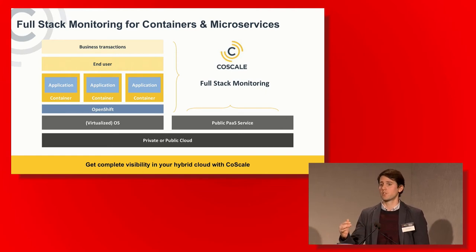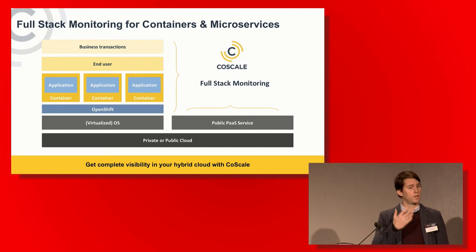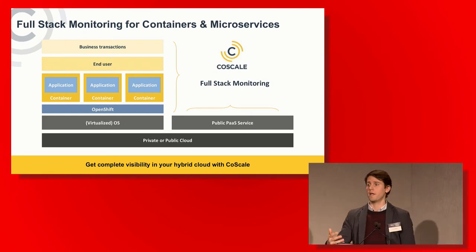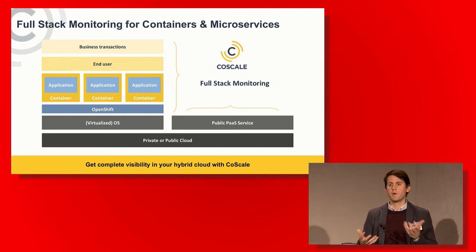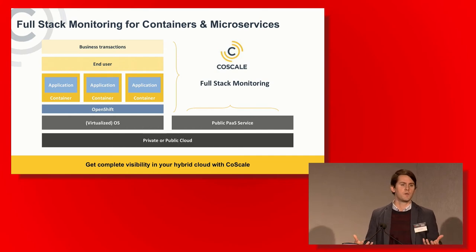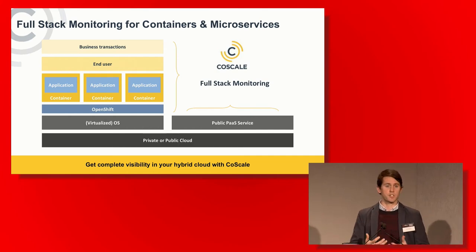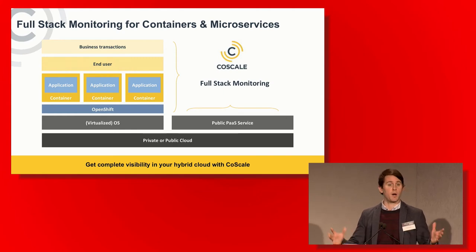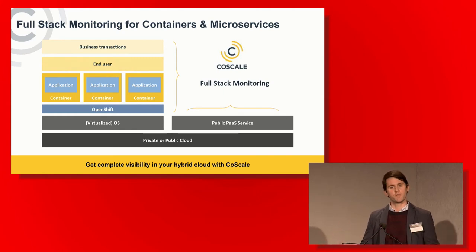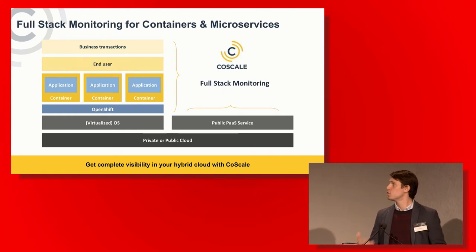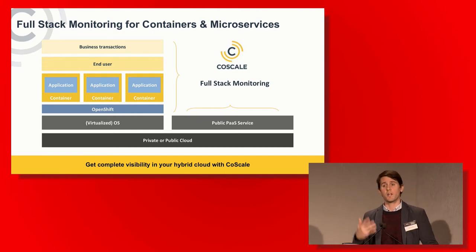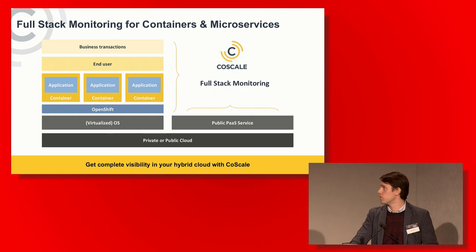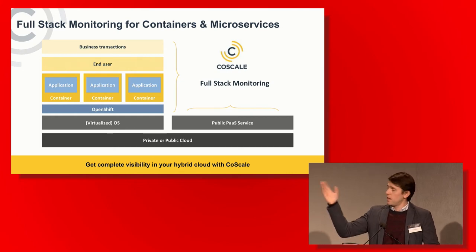The next layer is obviously your orchestration layer. If you're using OpenShift with Kubernetes behind the scenes, how is Kubernetes managing your containers? How are we mounting and consuming storage? Where are our containers running, and how many containers do we have for each of our services? We really try to understand how your orchestration layer is managing your container environment.